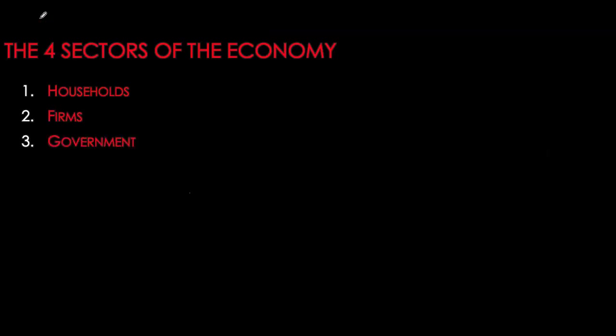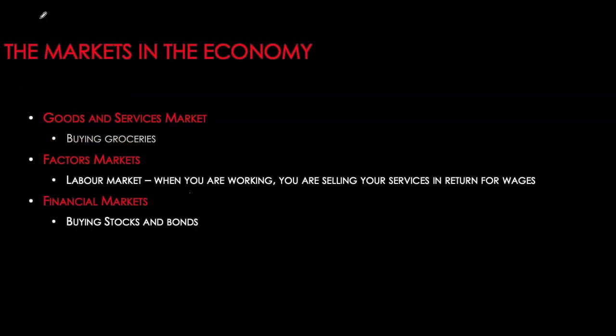The four main sectors of the economy are households, firms, government, and the rest of the world — you can think of them as the four main economic agents. In the macro economy, we're aggregating over all households, firms, government, and the rest of the world, so each sector comprises thousands or millions of individual entities. The three main markets in our macro economy are the goods and services market, factor markets, and the financial market.